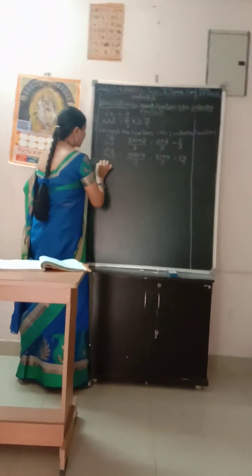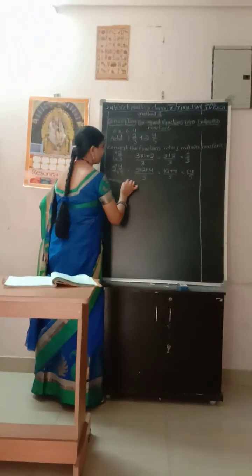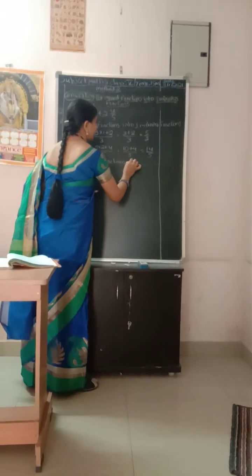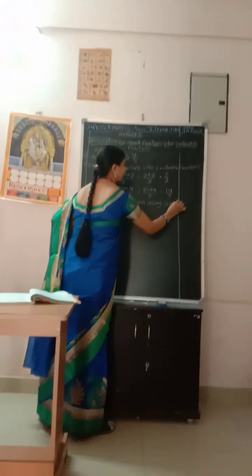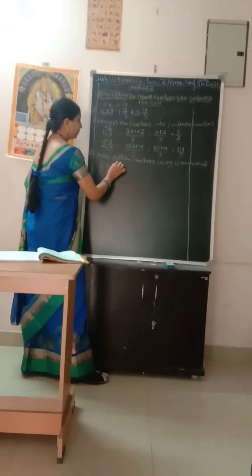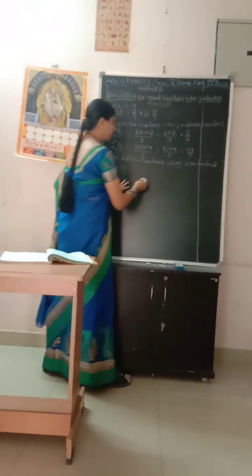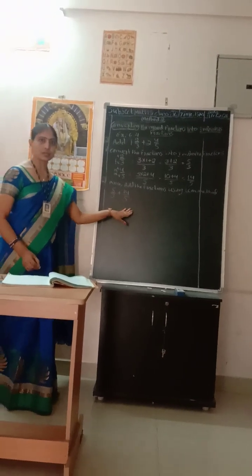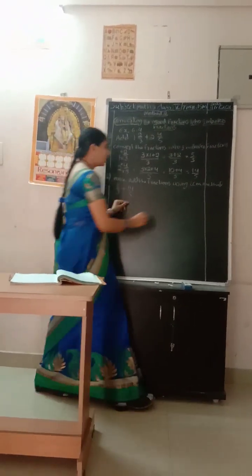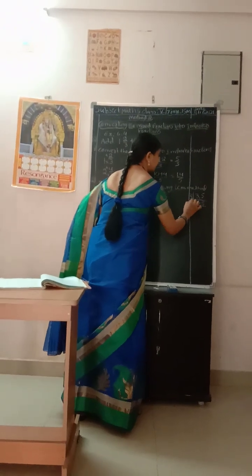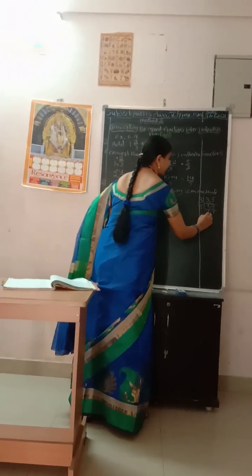Second step: now we add the fractions using LCM. We have 5 by 3 plus 14 by 5. So we add the like fractions. Let us find the LCM of 3 and 5. Three cross five — LCM is 15.